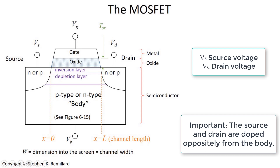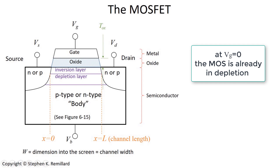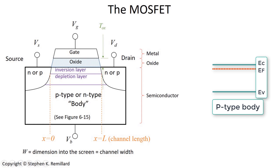To review how the MOS capacitor worked: when the gate voltage is zero, there is a little bit of depletion — no bias is in depletion mode. As we raise the gate voltage, the depletion layer grows. As you continue raising the gate voltage, the Fermi level at the surface starts to get really close to the other band edge — if it's P-type, close to the conduction band edge; if N-type, close to the valence band edge. And you develop this inversion layer near the surface.